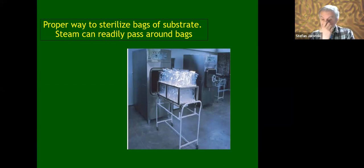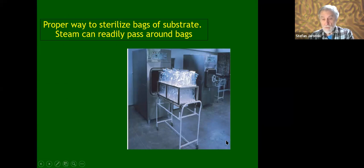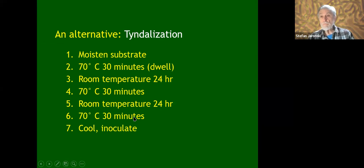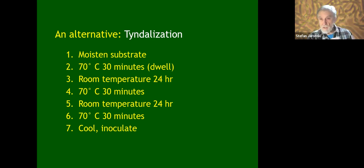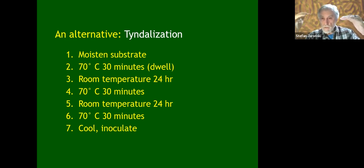There's an alternative process because steam sterilization requires a lot of energy — electricity or propane to operate the burner. You can try a process called tyndallization: moisten the substrate, heat it to 70°C for 30 minutes of dwell time, then cool it and let it sit overnight for 24 hours at room temperature. What that does is the first heating kills the vegetative cells.